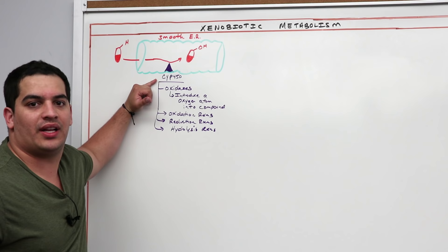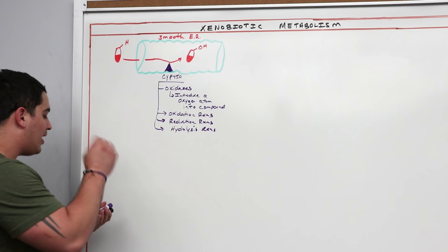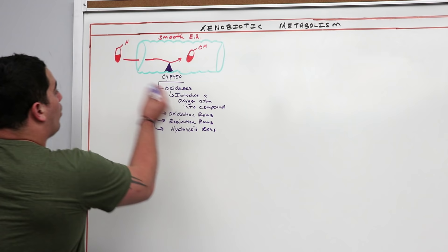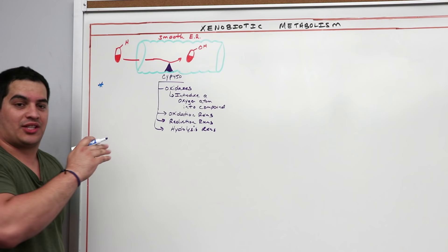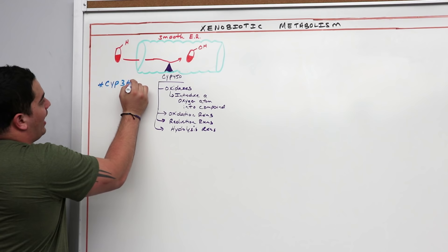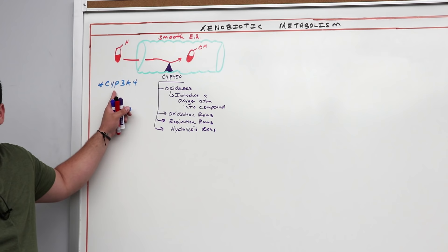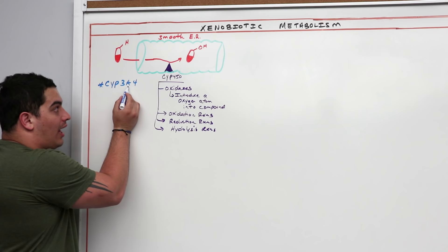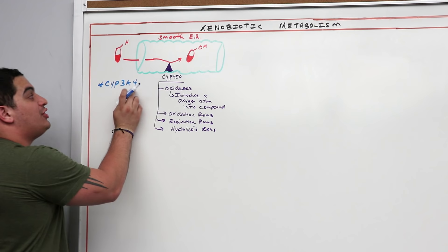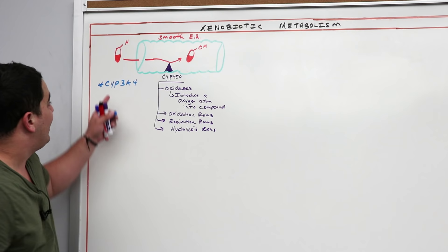The cytochrome P450 complex is made up of many different enzymes. One of the most important is CYP3A4. Here's how to read this nomenclature: CYP represents the superfamily of enzymes. The number three represents the family. The letter A represents the subfamily. And the number four represents the specific gene producing the protein responsible for drug metabolism.